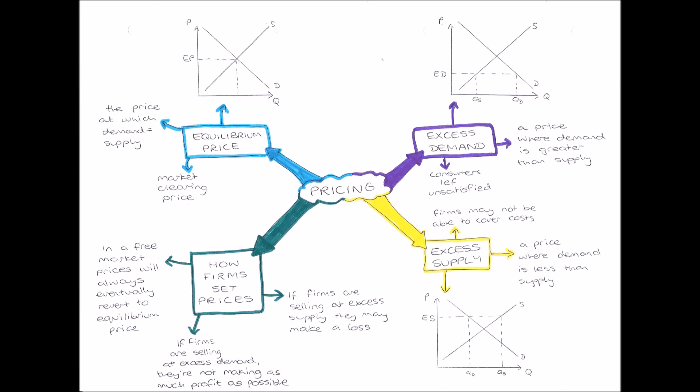Firms will also revert to the equilibrium price from excess supply. If the price is high at excess supply, there will be leftover stock they can't sell — goods they cannot sell because the demand isn't there — meaning they may not be able to cover their costs. They could make a loss and exit the market. So in a free market, whether price is high at excess supply or low at excess demand, firms will always revert to the equilibrium price so that they can make and maximise their profit.